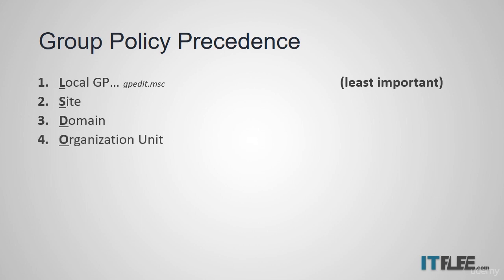Next we have the organizational unit. This is any GPO that is linked to a specific OU. That also goes for sub-OUs. If there's an organizational unit within an organizational unit, the sub-OU will be applied last, and therefore its settings will take precedence over anything that is above it.